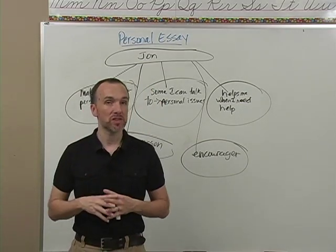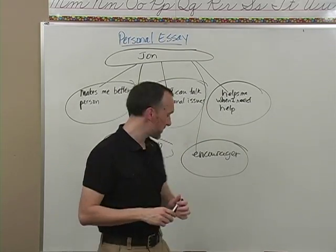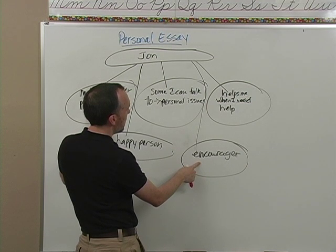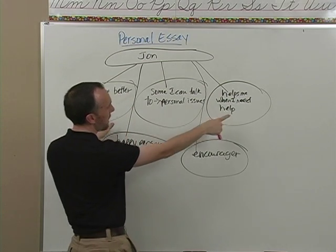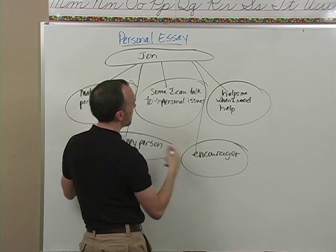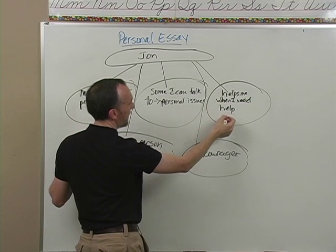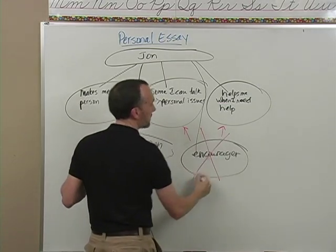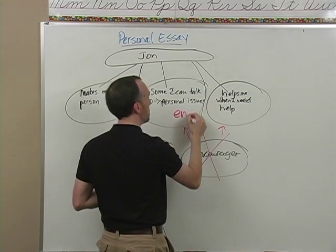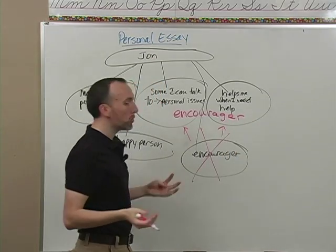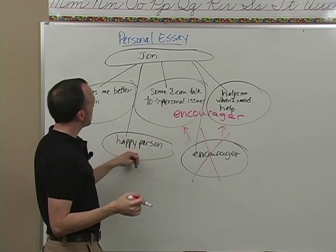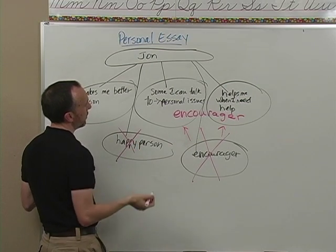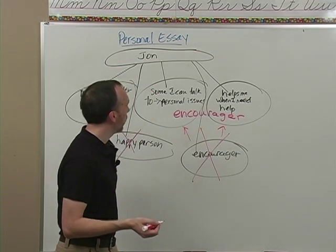When making this plan, I need to look and see if I can combine any of these, because sometimes they are sort of the same. Makes me a better person, he's happy, he's an encourager — this one could go with 'someone I can talk to about personal issues,' because he does encourage me in that area. So I'll mark that one off and make sure I include 'encourager' somewhere. He's a happy person — actually, let's exclude that one totally, because the remaining three are probably the most powerful I can talk about.